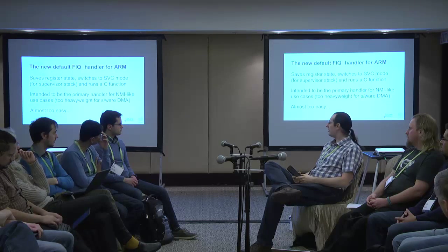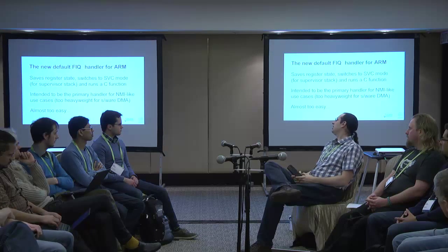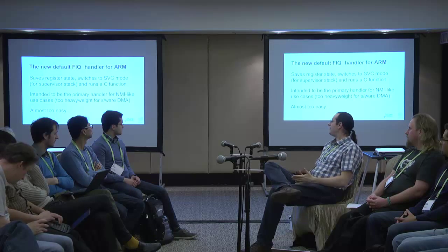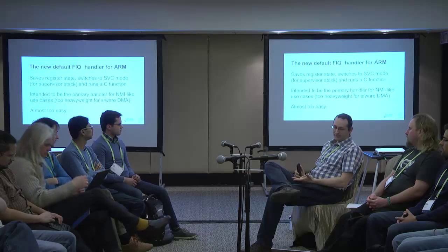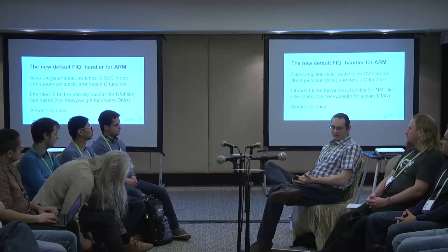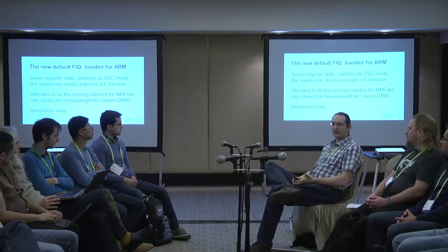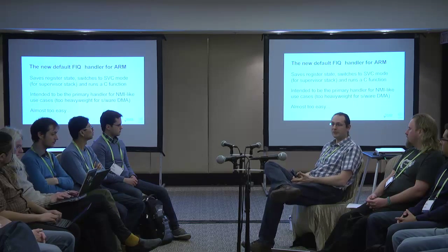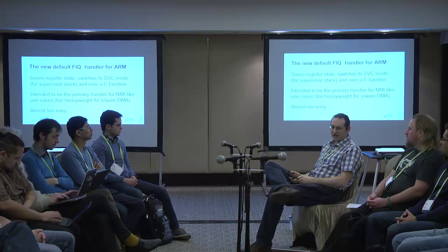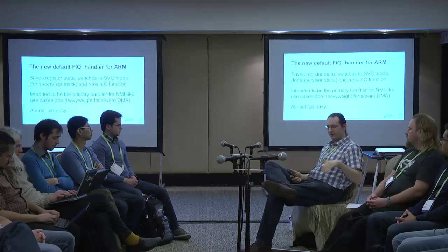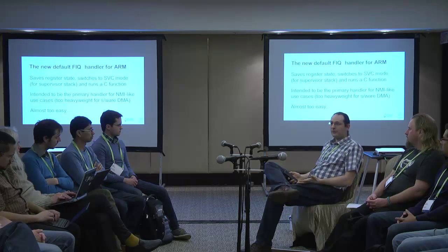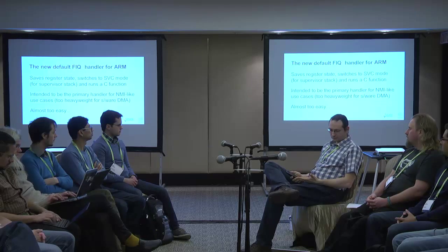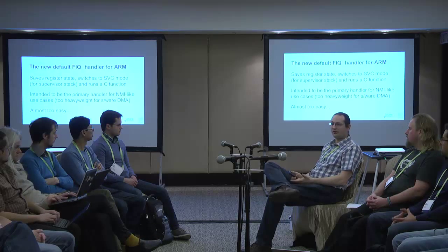The new default FIQ handler for ARM is upstream now. It makes FIQ just like any other exception: it saves a little register state, switches to supervisor mode where the kernel keeps its stacks, completes the context switch by dumping most registers onto the supervisor stack, and then hops into a C function. From there you're running all the C code you usually use to handle exceptions. This is intended to give us the primary handler for NMI-like use cases. It's not appropriate for software DMA since I've done about 16 memory writes, but it's almost too easy to use — it jumps into C.